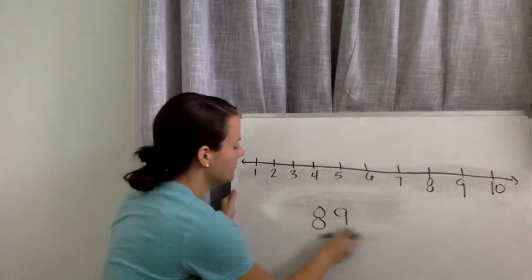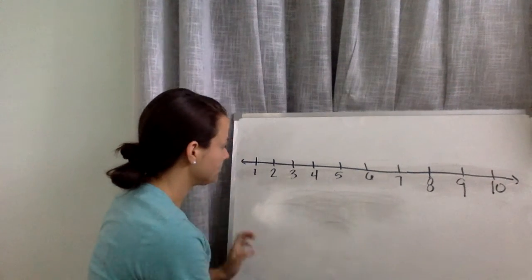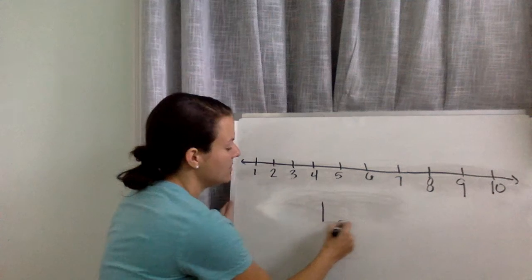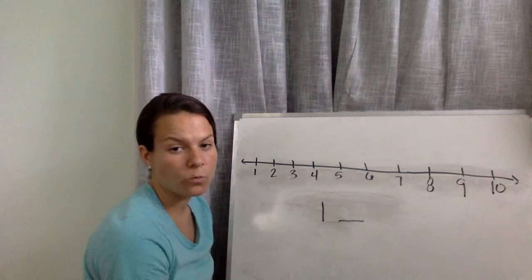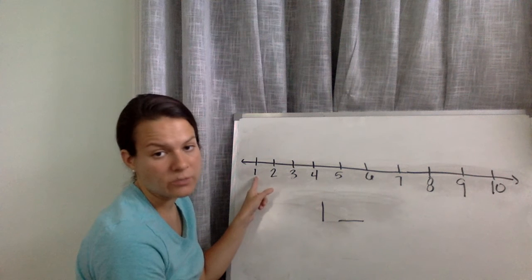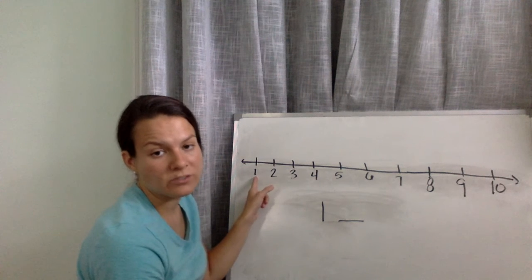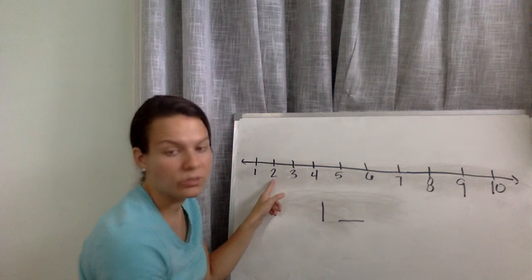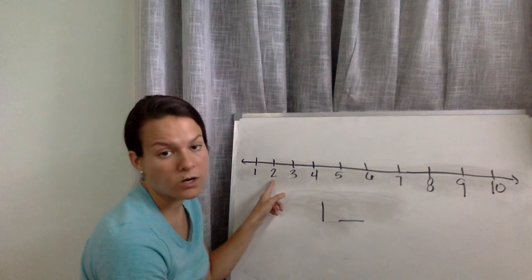Alright, let's find another number. Let's do 1. Let's find that number that's one more than 1. Alright, so what do we do? We put our finger on the number line, we find the number 1, and we jump. So let's jump. Good, and we land on what number? 2. 2 is one more than 1.